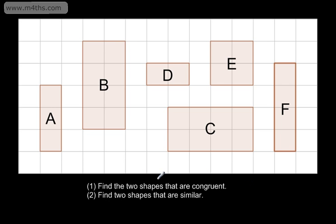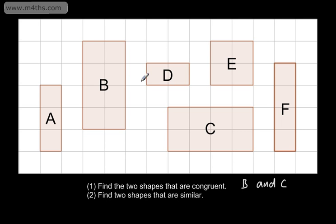So let's go ahead and find the two shapes that are congruent — which two are identical? We've got a range of different rectangles and a square: a 1x3, a 2x4, a 1x2, a 2x2, a 2x4, and a 1x4. The two identical ones are B and C. It doesn't matter that one shape is on its side and the other is on its end — they are the same shape and the same size, both 2x4 rectangles.